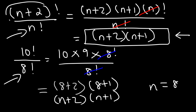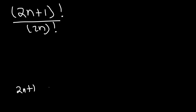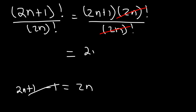Now let's try one last example: (2n+1) factorial divided by (2n) factorial. Now, what's 1 less than 2n+1? If you subtract it by 1, the next number will be 2n because the 1s cancel. So this is going to be (2n+1) times (2n) factorial, and we already have (2n) factorial on the bottom, so these can be cancelled. Therefore the final answer is just 2n+1. So now you know how to simplify factorial expressions. And that's it for this video, thanks for watching.